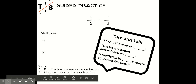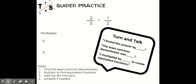Before we try the next one, I'd like to ask you a question. Please choose one of the sentence frames and respond either to yourself or turn and talk to a sibling or parent. Use one of the sentence frames: 'I found the answer by blank,' 'The least common denominator was blank,' or 'I multiplied by blank to create equivalent fractions.' Go ahead and pause to fill in one of those sentences.